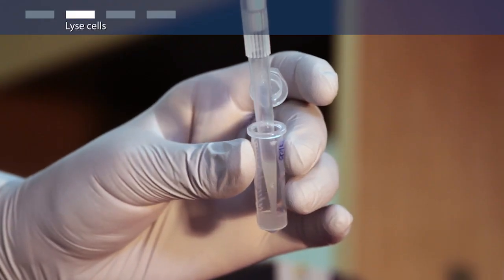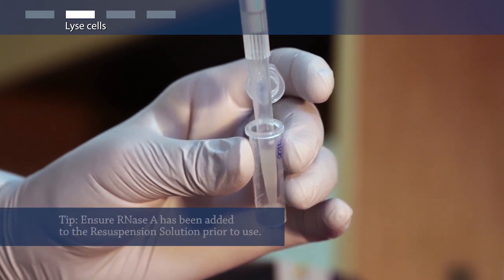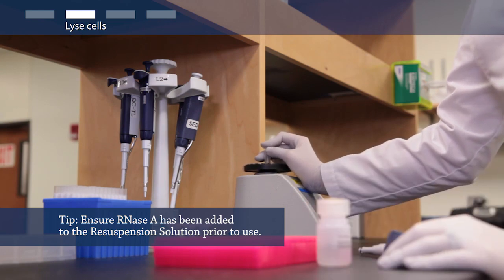First, resuspend your pelleted bacterial cells in 250 microliters of resuspension solution. Vortex or pipette to mix thoroughly.